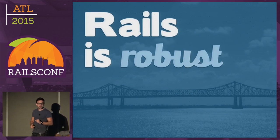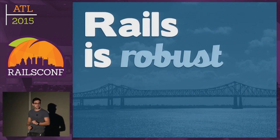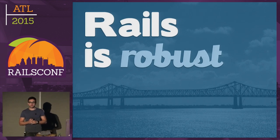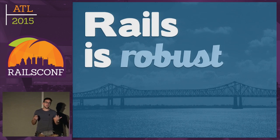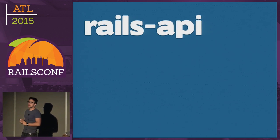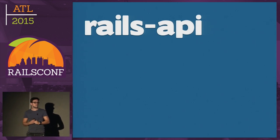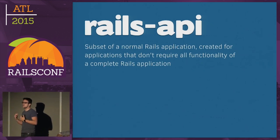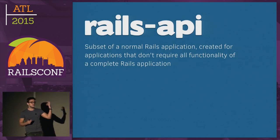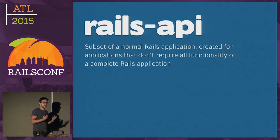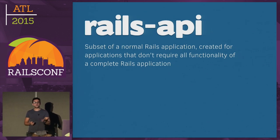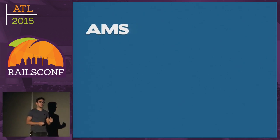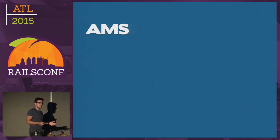Rails has a lot of parts you might not want when developing an API. This is why Rails API exists. What Rails API does is remove the parts of Rails you don't really need when developing an API, and brings new functionality you might want. One of these projects built into Rails API is ActiveModel Serializer, also known as AMS.